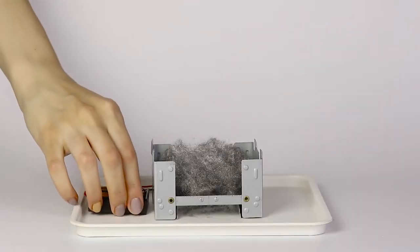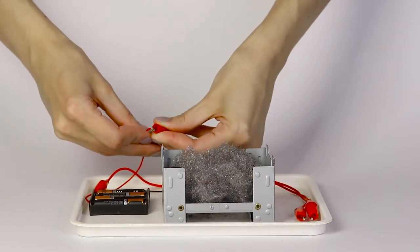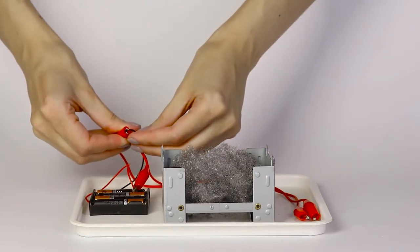Now take the battery holder with the batteries and the crocodile clip wires. Attach the crocodile clips to the wires in the battery holder.